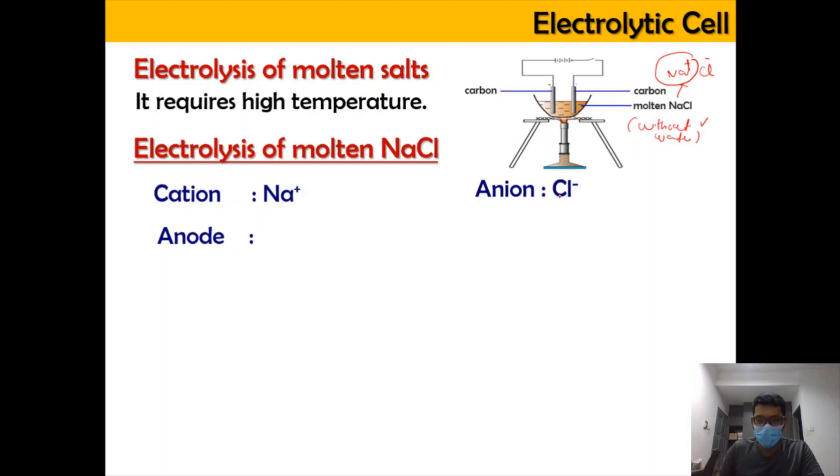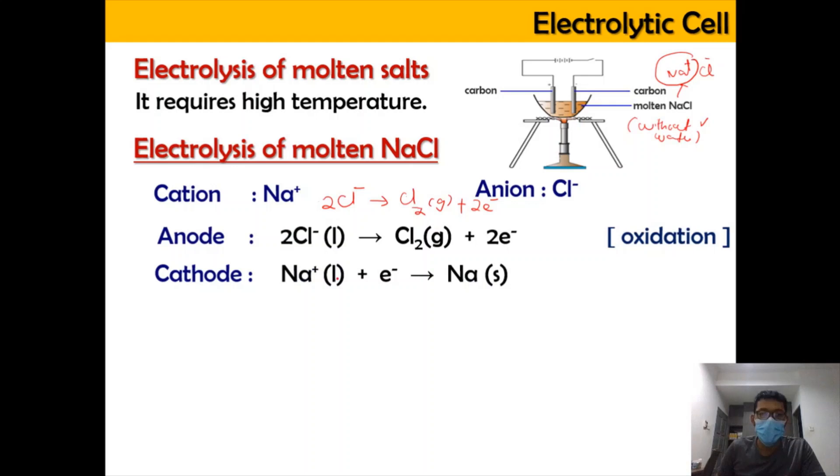Anode is chloride ion where it will undergo oxidation from chloride ion. It will form chlorine gas and it needs to be two chloride ions to balance it out and will be releasing two electrons: 2Cl-(l) → Cl2(g) + 2e-. The charge here is going to be negative two on both sides, so it is balanced and undergoes oxidation. Meanwhile, at cathode, the Na+ here will accept one mole of electron in order to form Na solid and this is known as reduction.